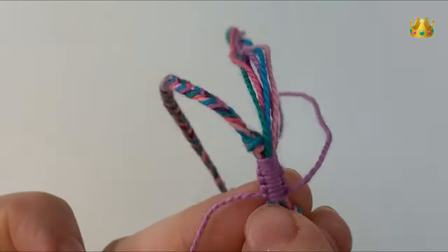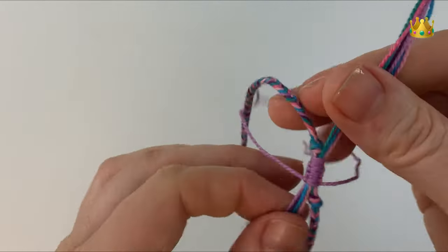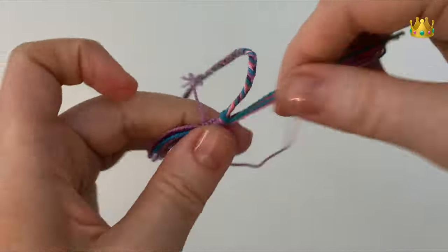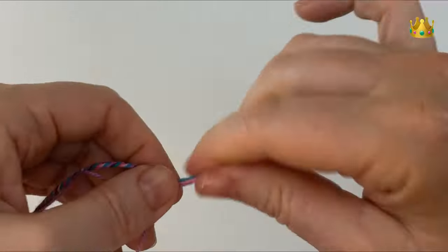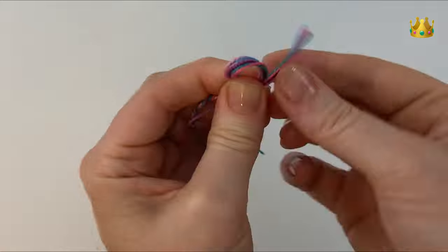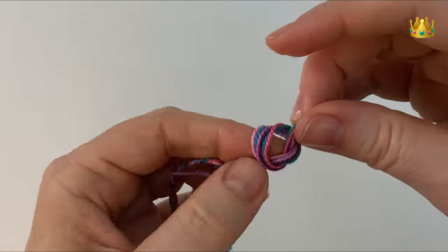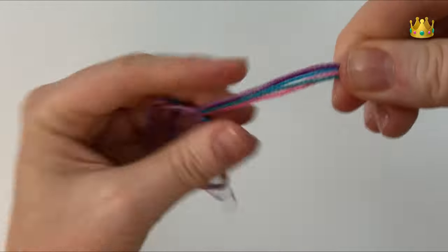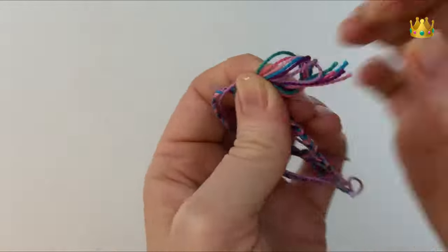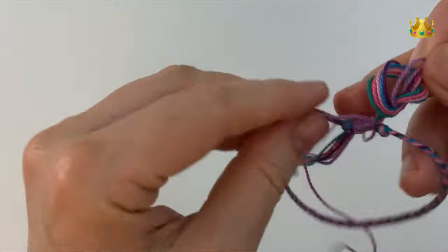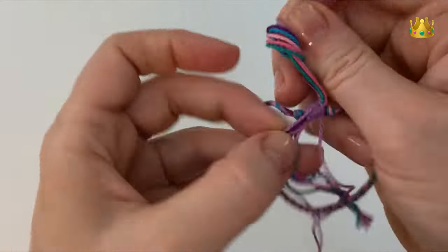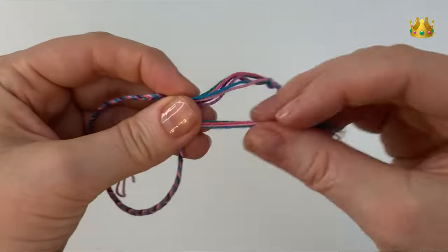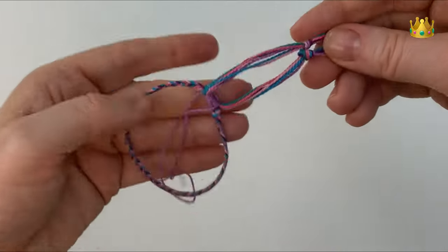Once you're happy with the size of your slider, pull all your cords out tight, making sure there's no slack or loose ends in any of them. Then we just tie a simple overhand knot at the end of each bunch of threads, trying to pull those knots out so they're sitting nice and even on your threads.